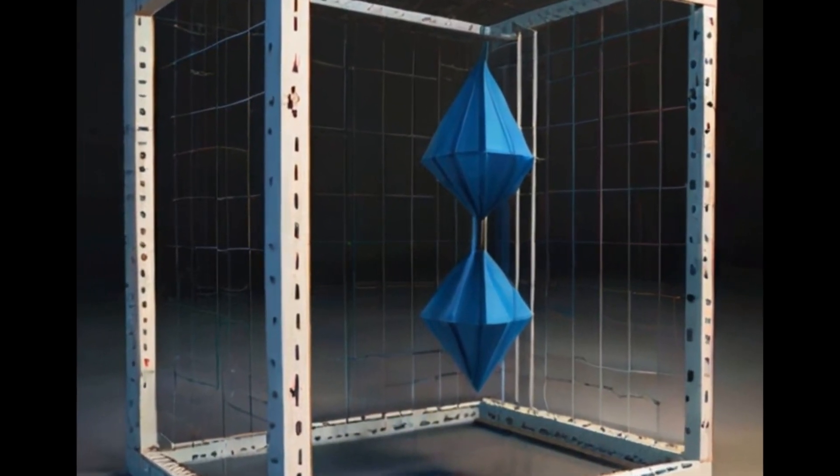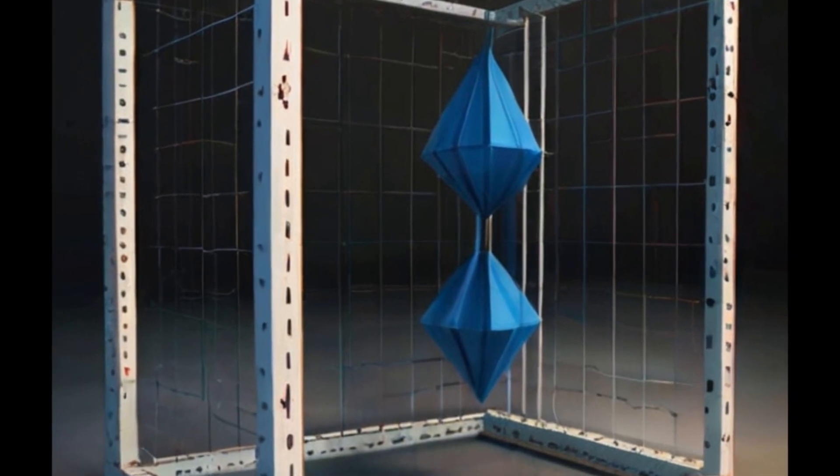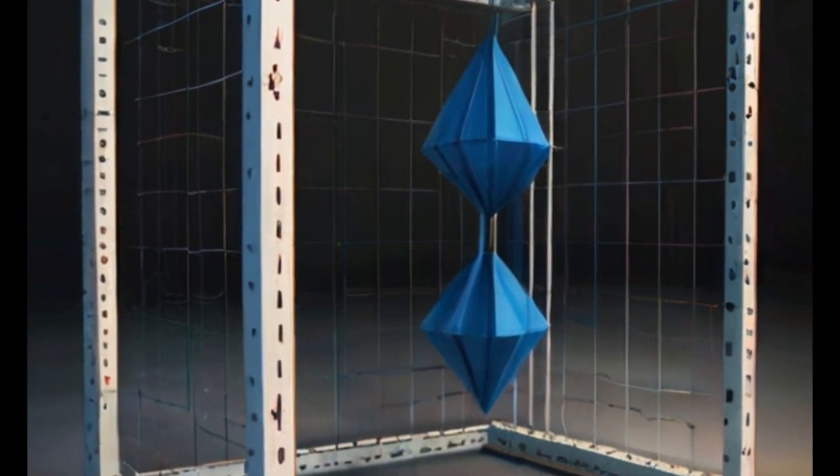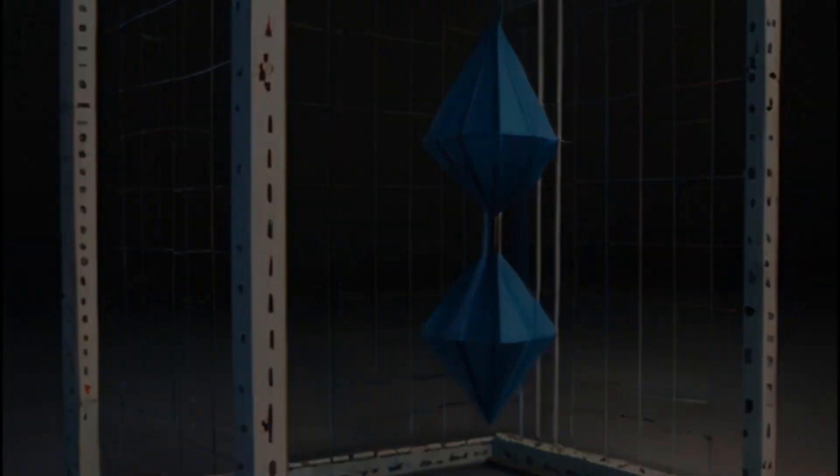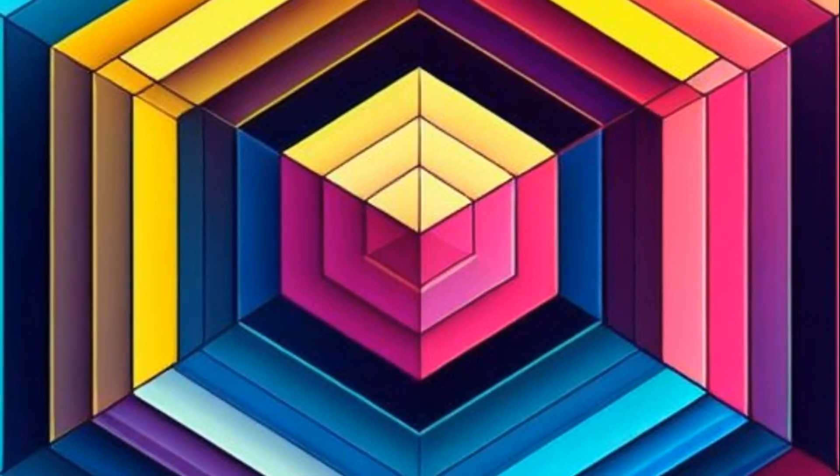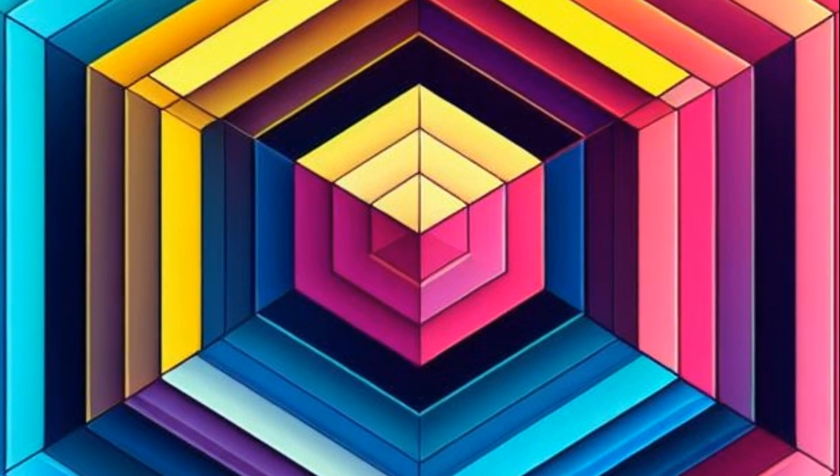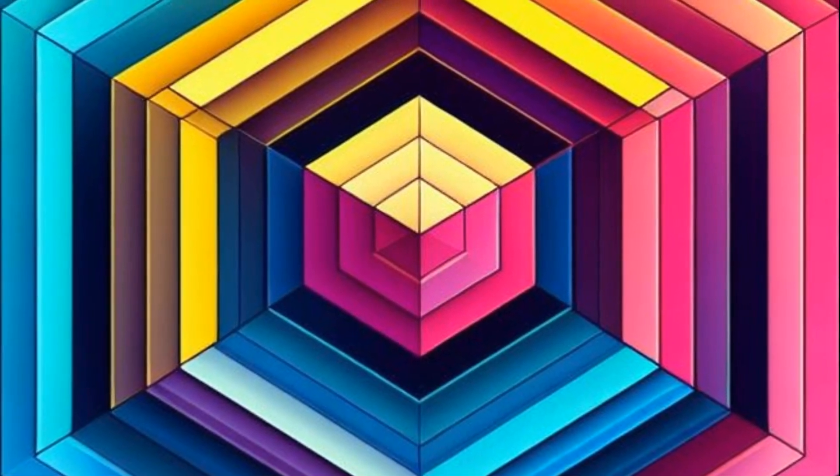According to string theory, these 7 additional spatial dimensions are compactified or wrapped in very small scales, impossible to be observed directly with our senses or with current instruments, and are often described in terms of complex geometric varieties.